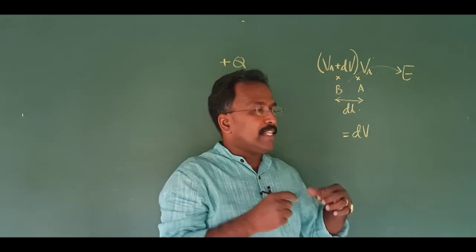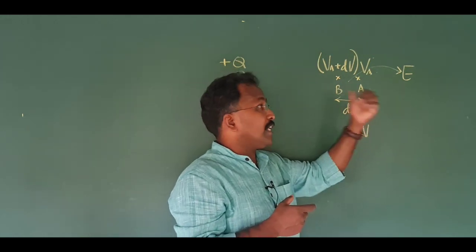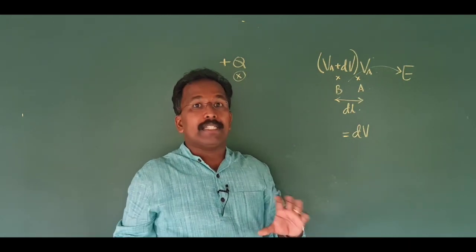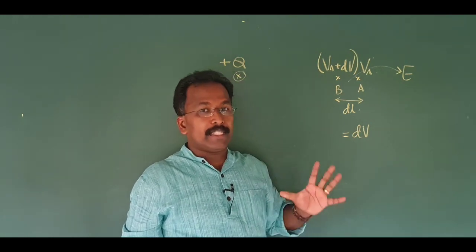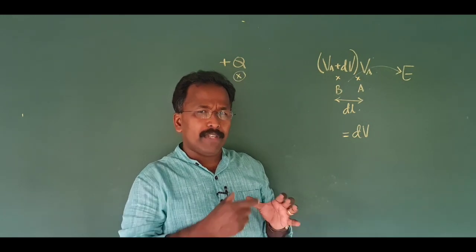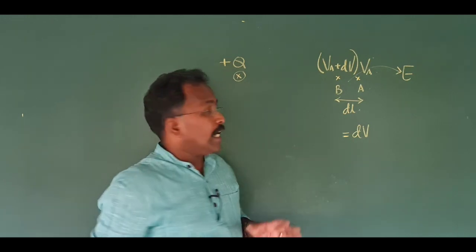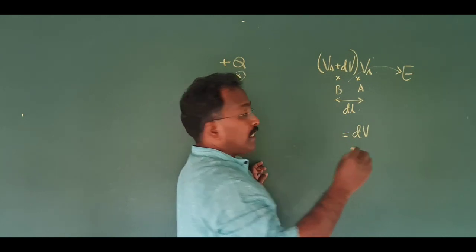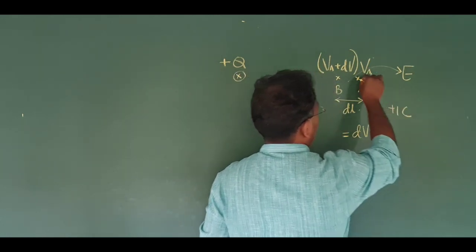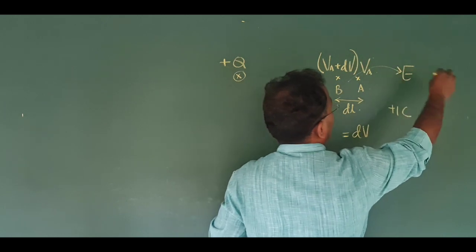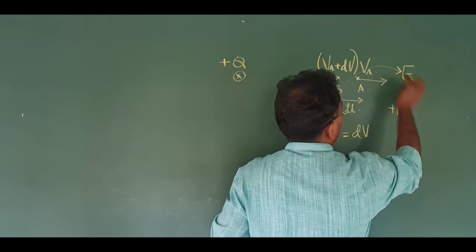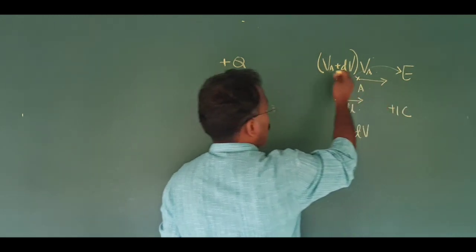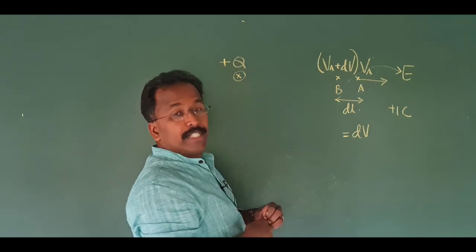The electric field is almost constant between A and B. If you think about it, we can imagine the points to be very close. So, if you have an electric field of intensity E, we can imagine a plus one charge here, in the same direction. E is a force, so you can see the work here — force into displacement.